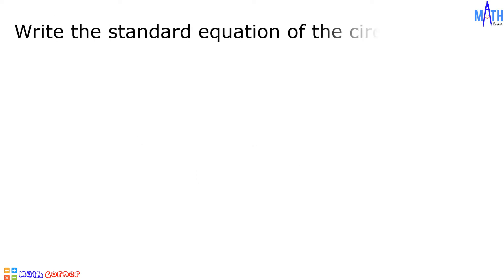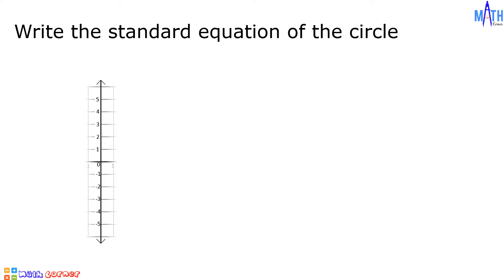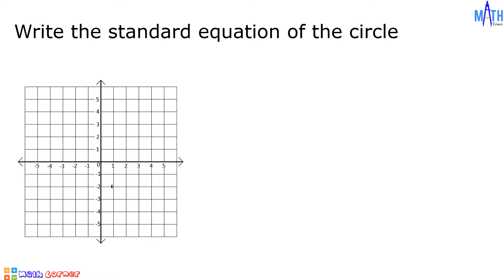Let us write the standard equation of the circle given the center and the radius. Example number 1: we have a circle where the center is located at (1, negative 2) and the radius is equal to 3.